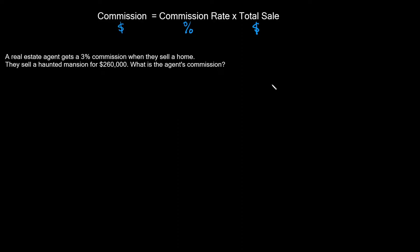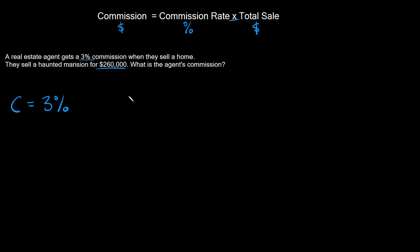Let's jump into the first example. A real estate agent gets a 3% commission when they sell a home. They sell a haunted mansion for $260,000. So what is the agent's commission? Our formula says commission C equals the commission rate — which is 3% — times the total sale of $260,000.